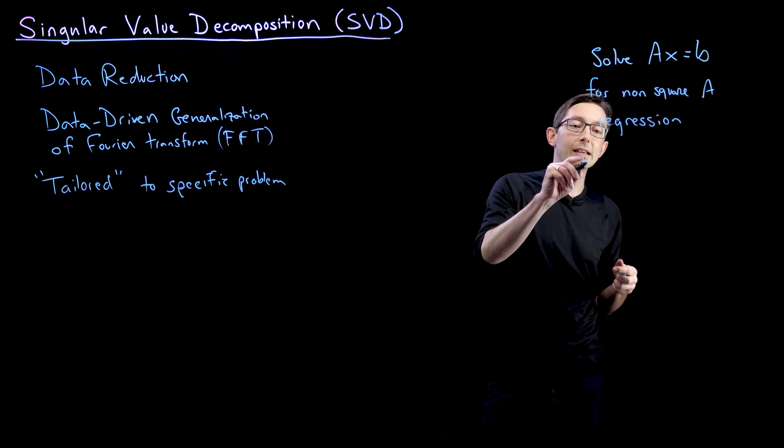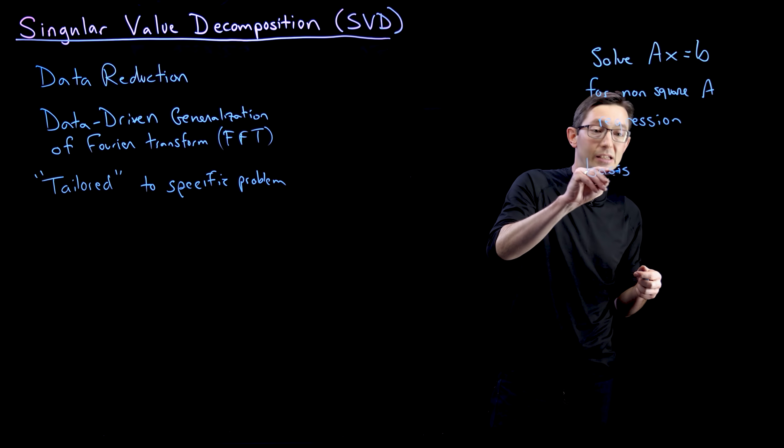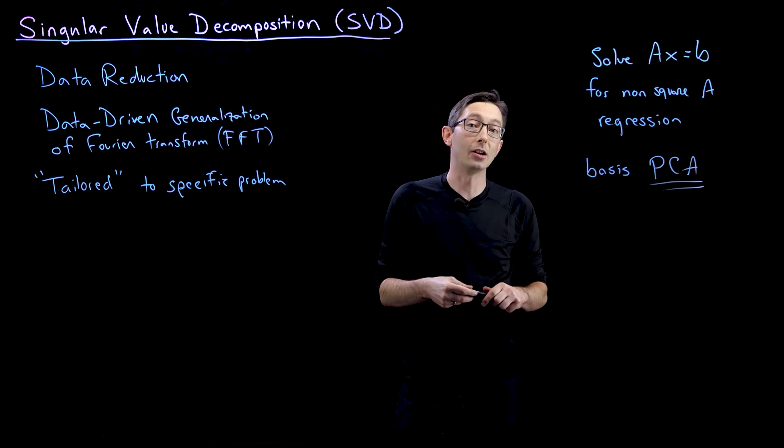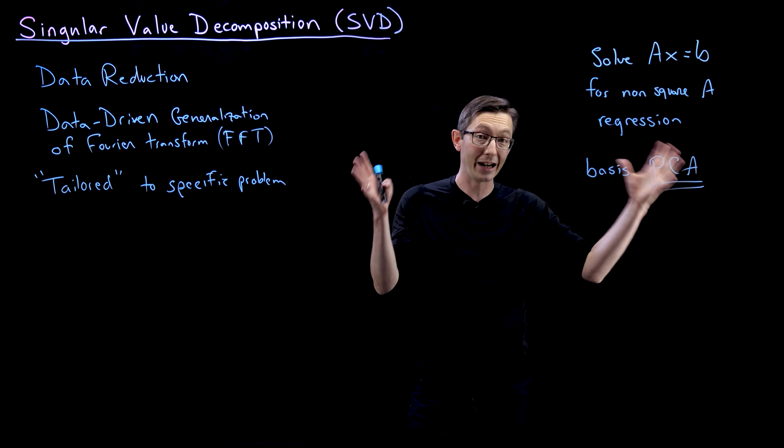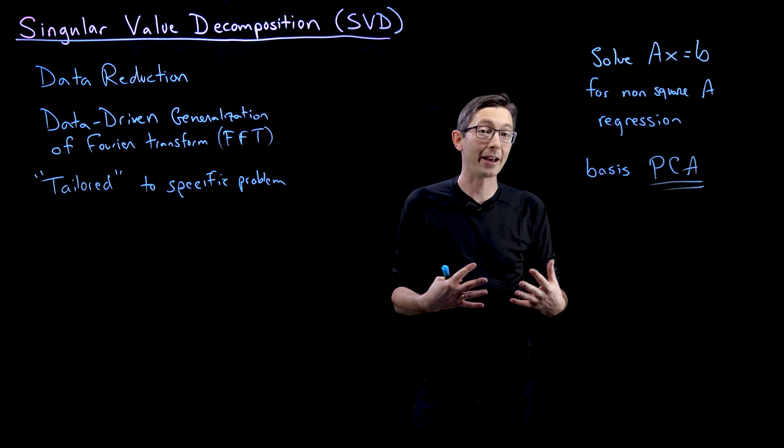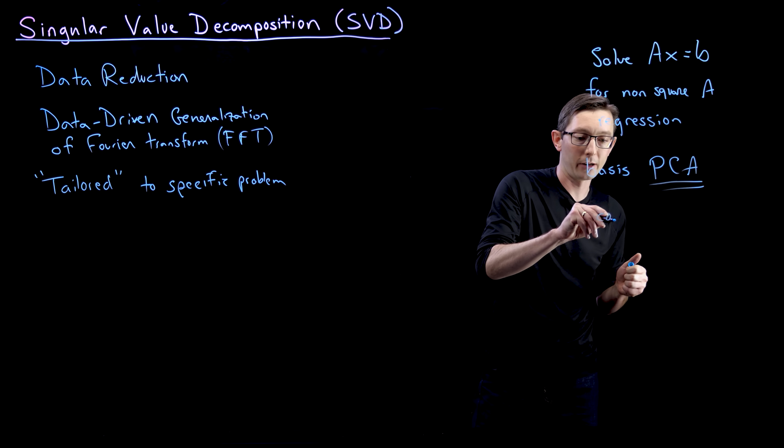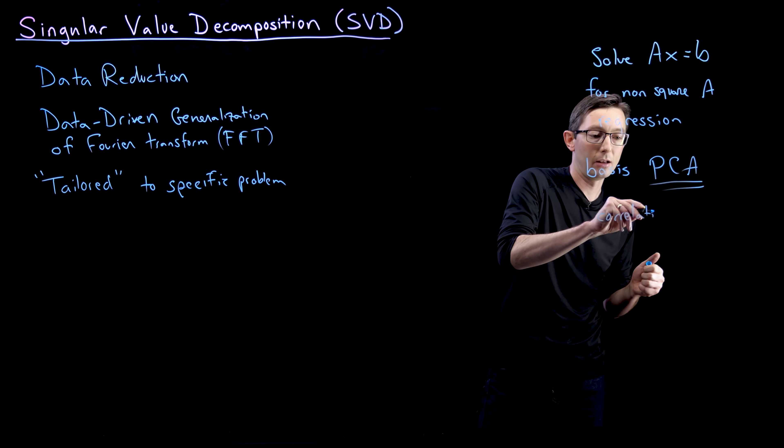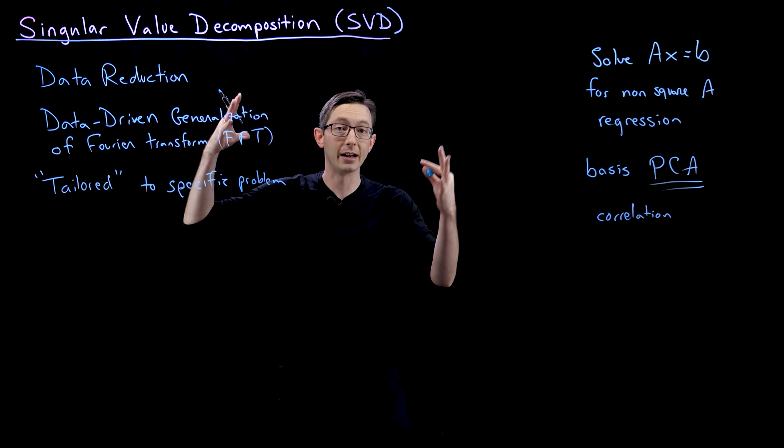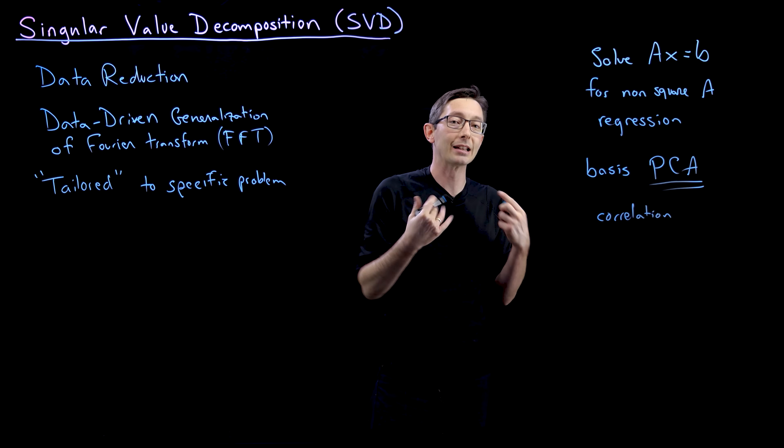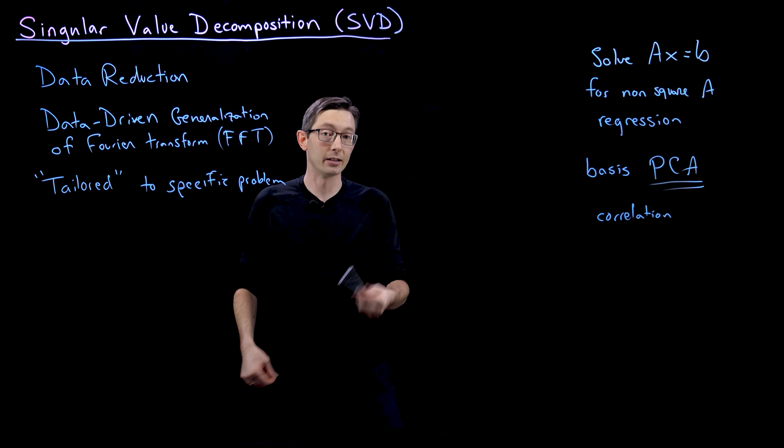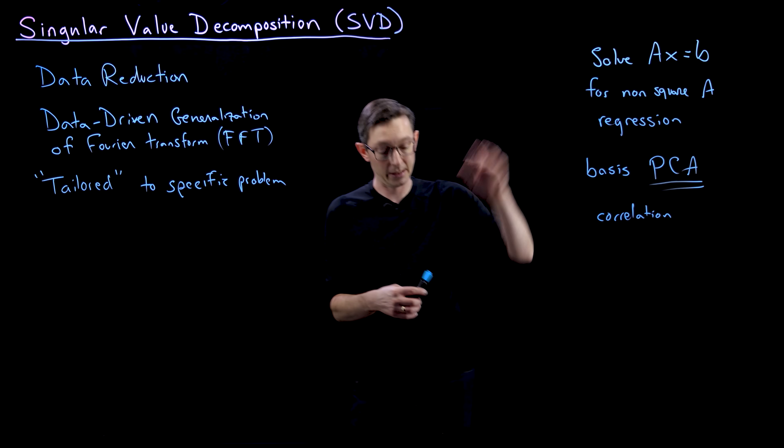I can also use this as the basis for the principal component analysis, PCA, which is one of the most widely used techniques in all of statistics for taking high dimensional data and trying to understand it in terms of its dominant patterns or correlations. So that's a key word we're going to talk a lot about is correlation. The singular value decomposition is going to take high dimensional data and distill it down into the key features, the key correlations in that data that you can then use to interpret and understand and model that data.